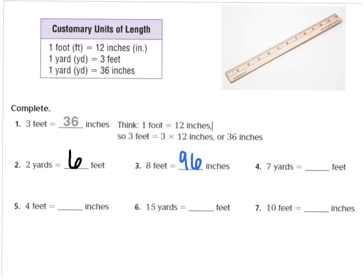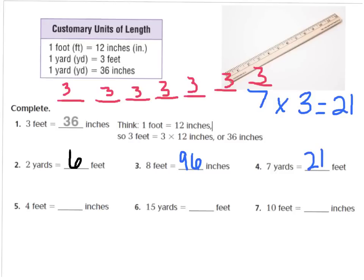Number 4 says 7 yards equals how many feet? I know that 1 yard equals 3 feet. So if I have 7 yards, I would say 7 yards times 3 feet, and that would equal 21. So 7 yards equals 21 feet — that would be like adding 3 seven times.